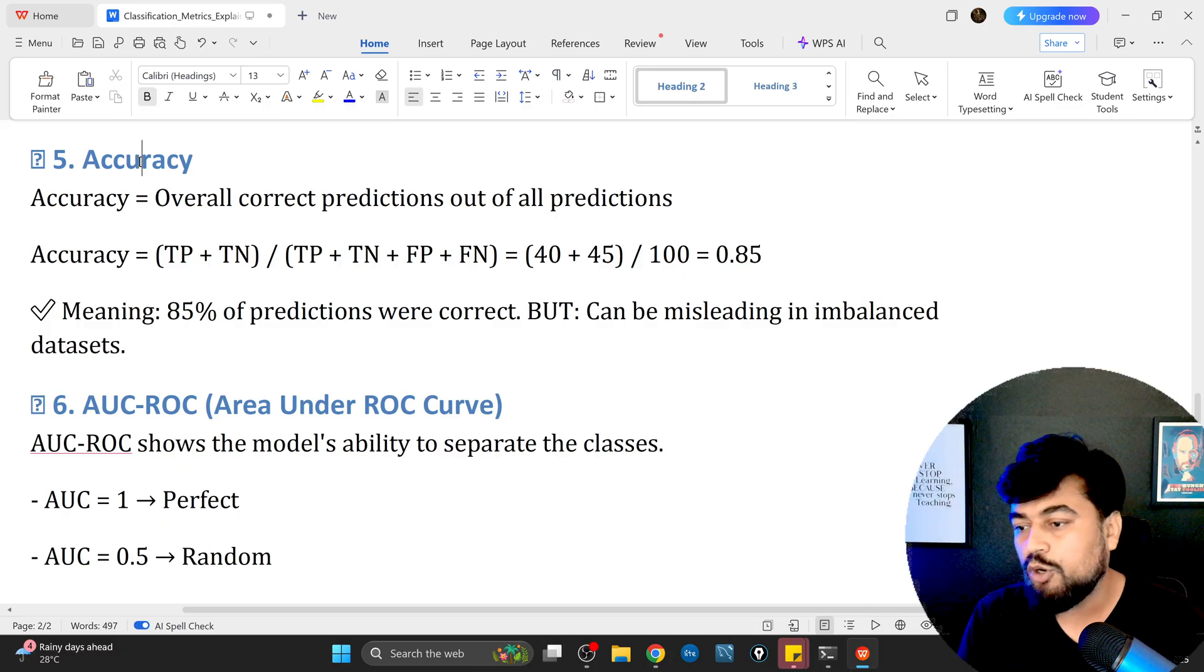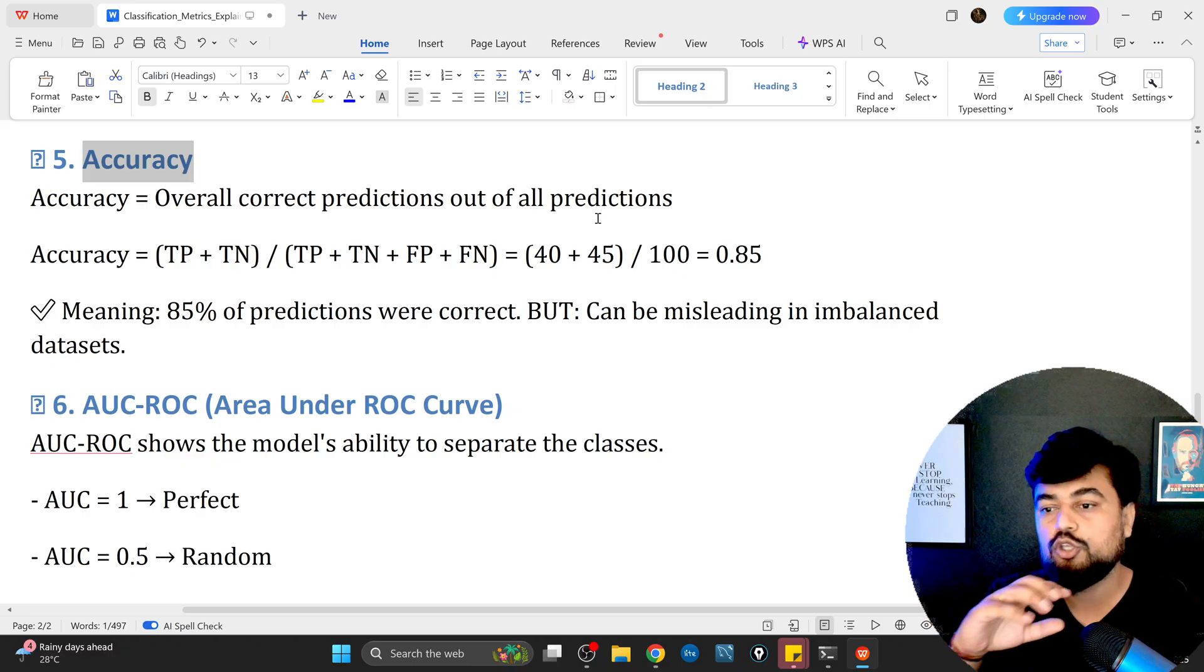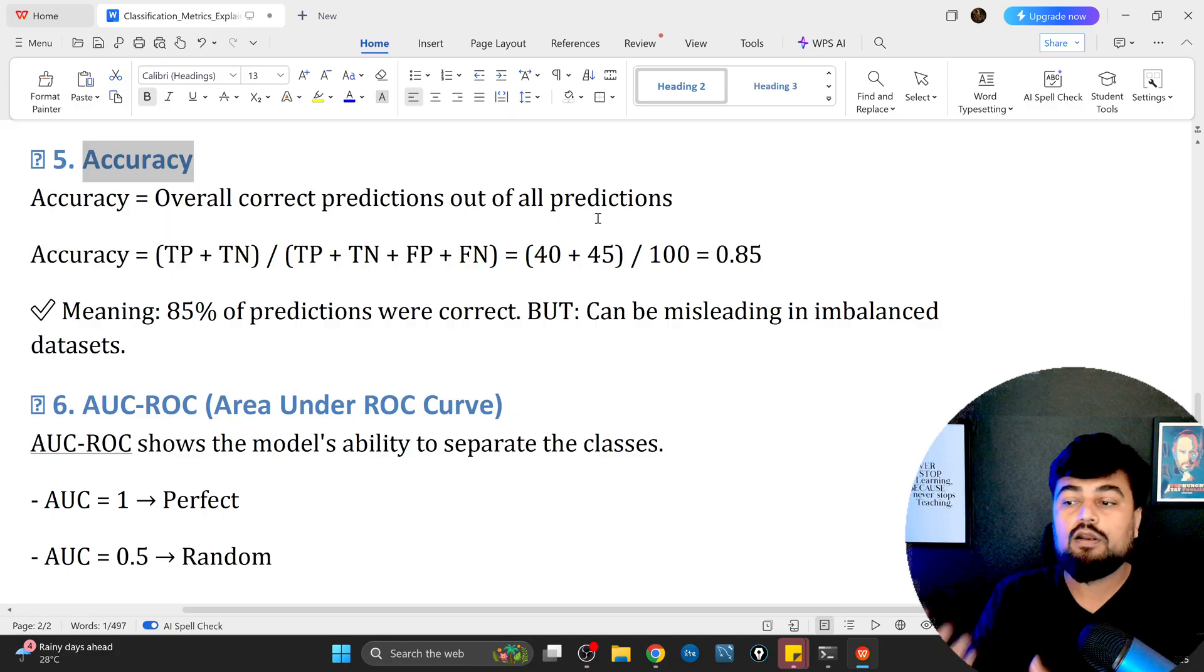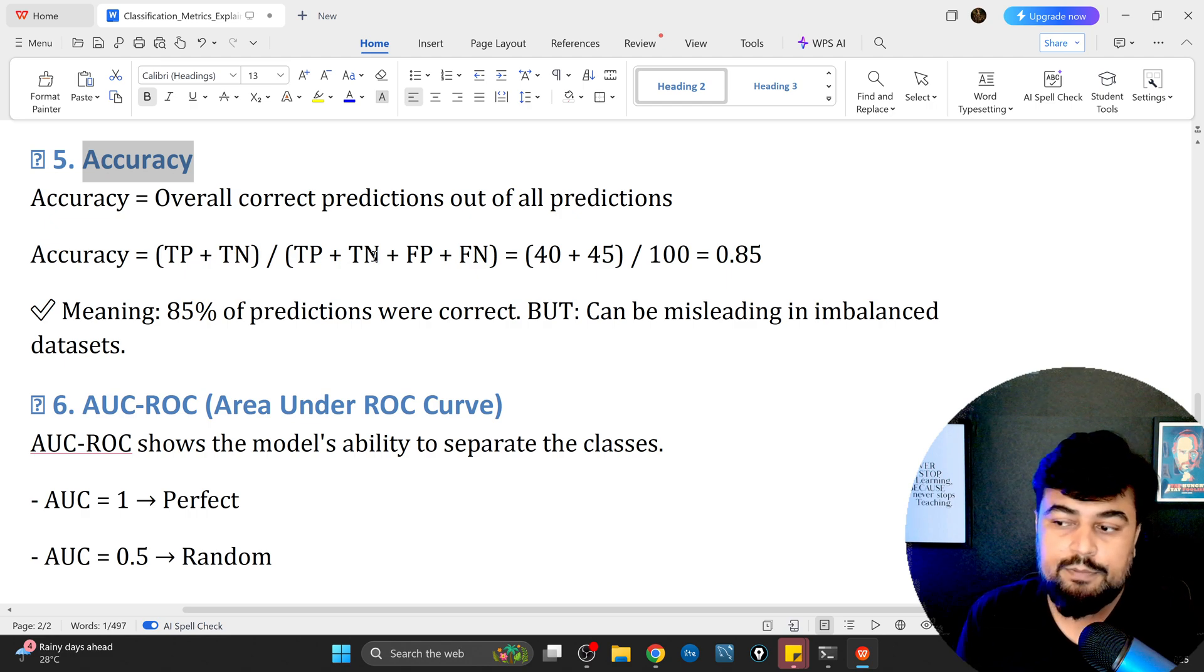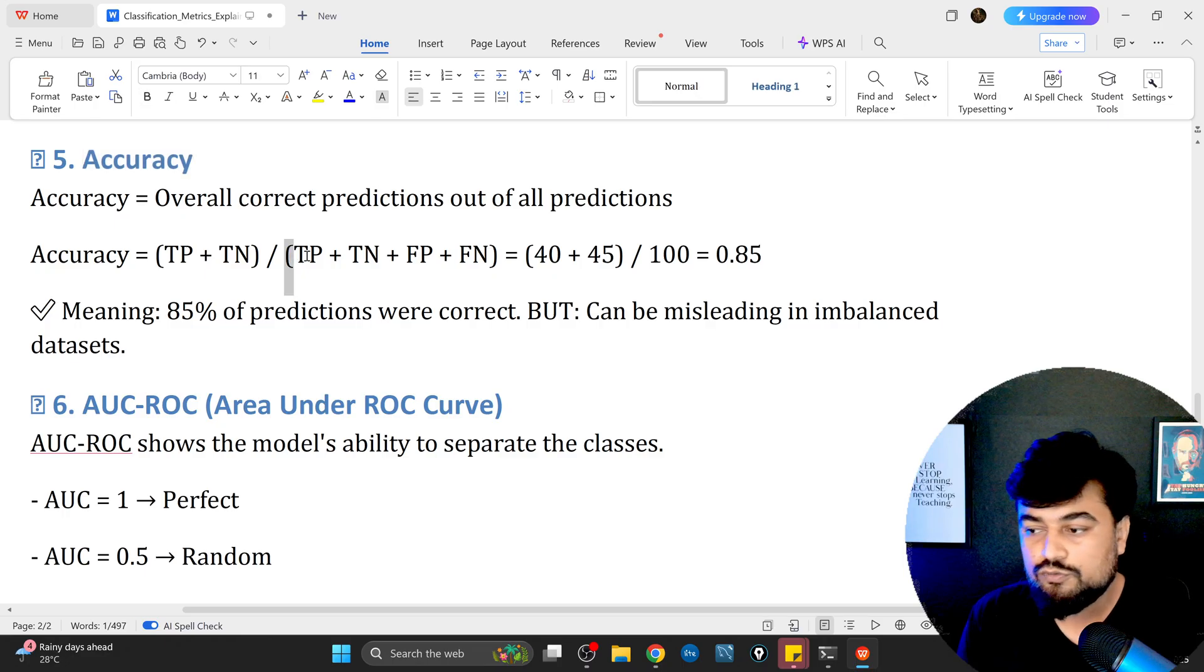What is the accuracy of the model? Overall correct predictions out of all predictions. The formula is TP plus TN divided by the sum of all four. You can see that is 85%. Again, 85% of predictions were correct but this can be misleading in imbalanced datasets.